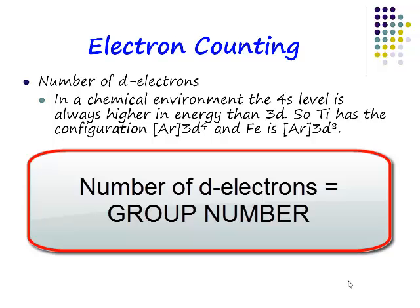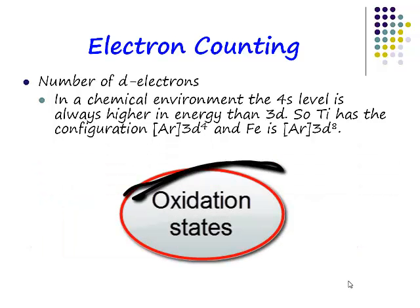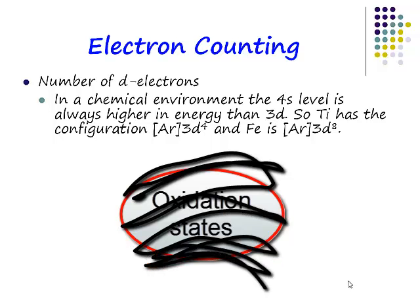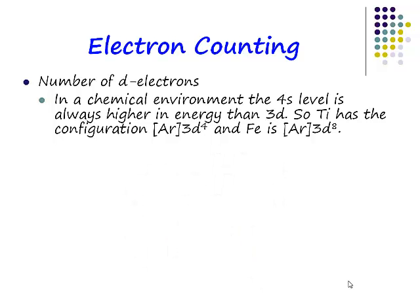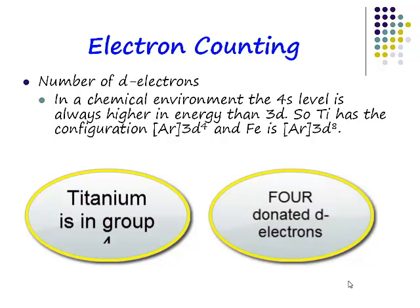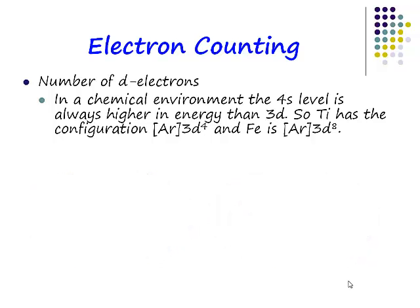This is a really important point. We are not interested in oxidation states. Our methodology has nothing to do with oxidation states. So if titanium is in group 4, it donates 4 electrons to our complex. Iron is in group 8, it donates 8 electrons to our complex.